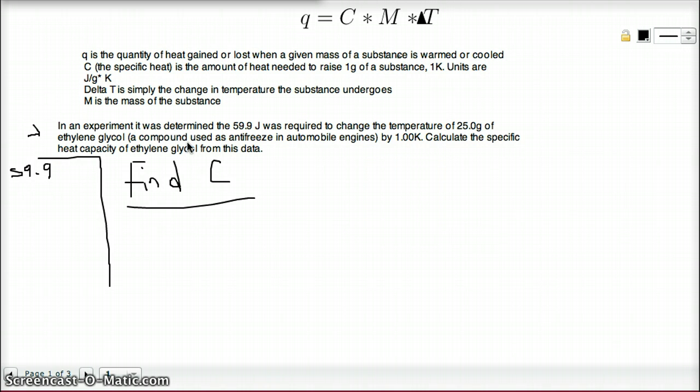We know that it requires 59.9 joules to change the temperature, so we know that Q must be 59.9. And that M must be 25 grams. And we know the change in temperature is 1 kelvin. So now we can plug these three things back into this equation to find C.